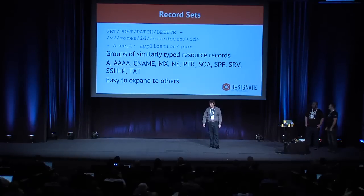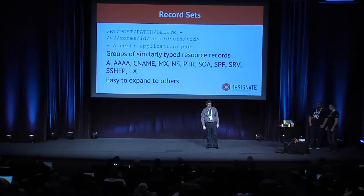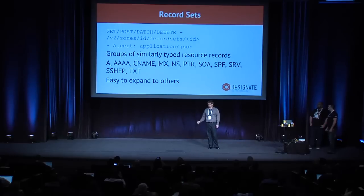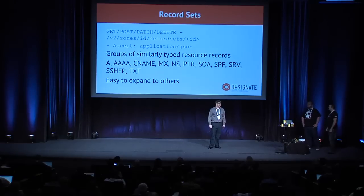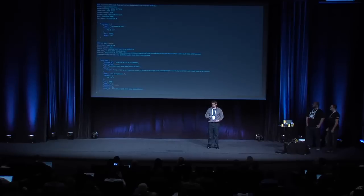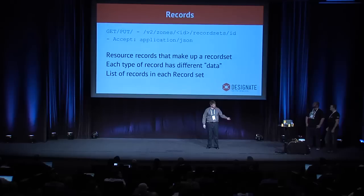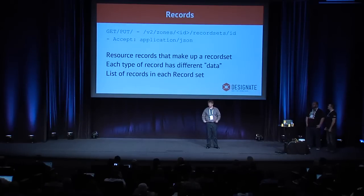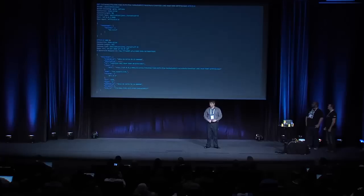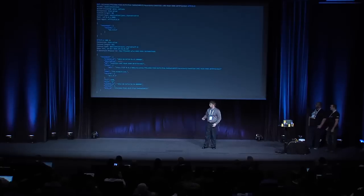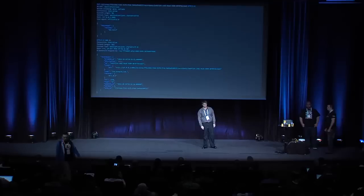Record sets are a very important resource in Designate — covering all the various record types you might use: A records, Quad-A records, CNAMEs, et cetera. It's easy to add custom record types if needed, as we encapsulate them into objects. Each record set type has a different data field important for that record type — for A records that would be an IP address, for CNAMEs a fully qualified domain name, for SOA records expiries and retries. Record sets have a sub-resource of records, and you can modify, add, or delete many of them at one time using nested collections.